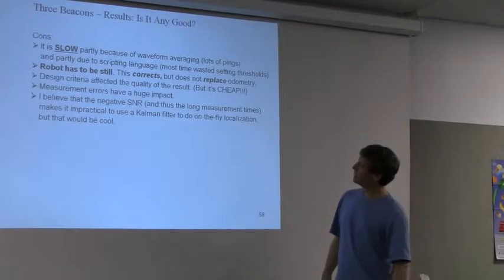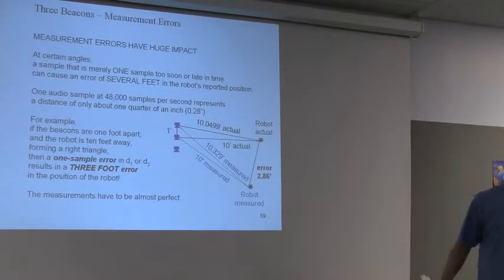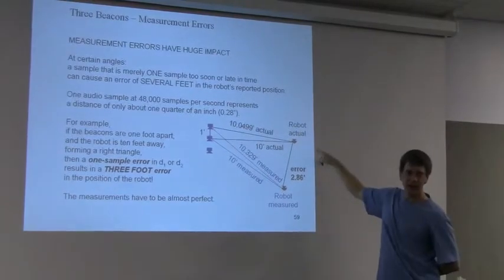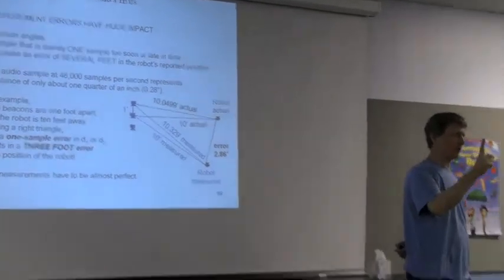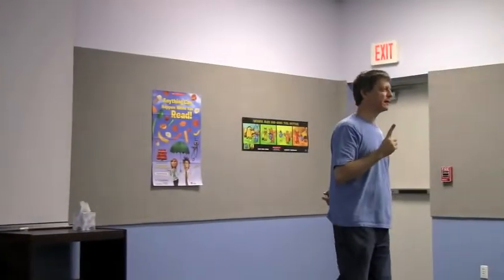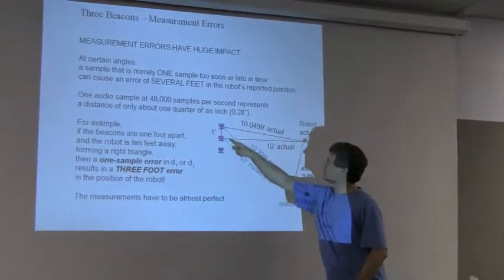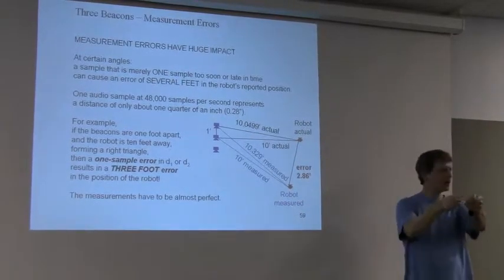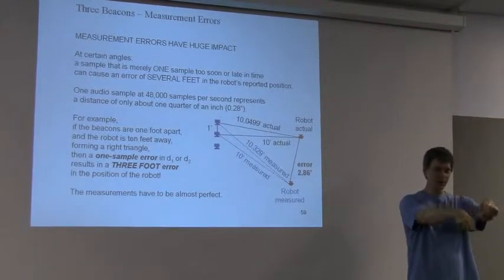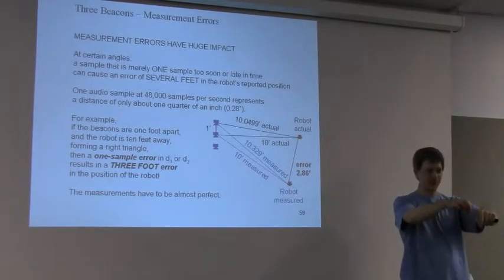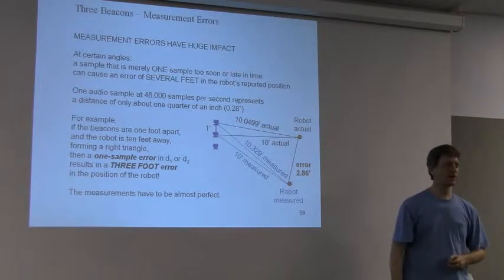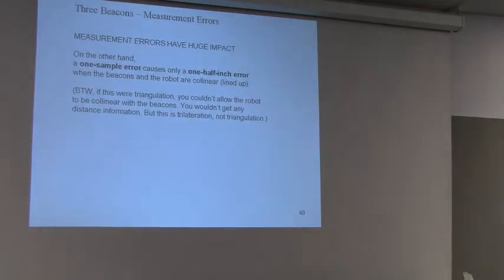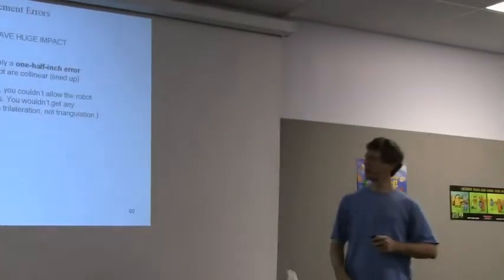Measurement errors have a huge impact on it. And what kind of impact? If you set the beacons too close together, let me show you what happens. Let's say the beacons are just one foot apart, and the robot is ten feet away. And you have a one-sample error, one-sample error on the measurement of the distance, on one of those two distances, like this distance and this distance. Just one-sample error puts you three feet away. It's like the marionette, in the puppets. You move the little movement here, and the marionette goes like this because the puppeteer is doing like this. It's that kind of problem. So, you can see that I put the beacons far apart. Of course, if the beacons are collinear, there's no problem. As opposed to triangulation. But triangulation, I told you about that before. I don't need to mention that anymore.